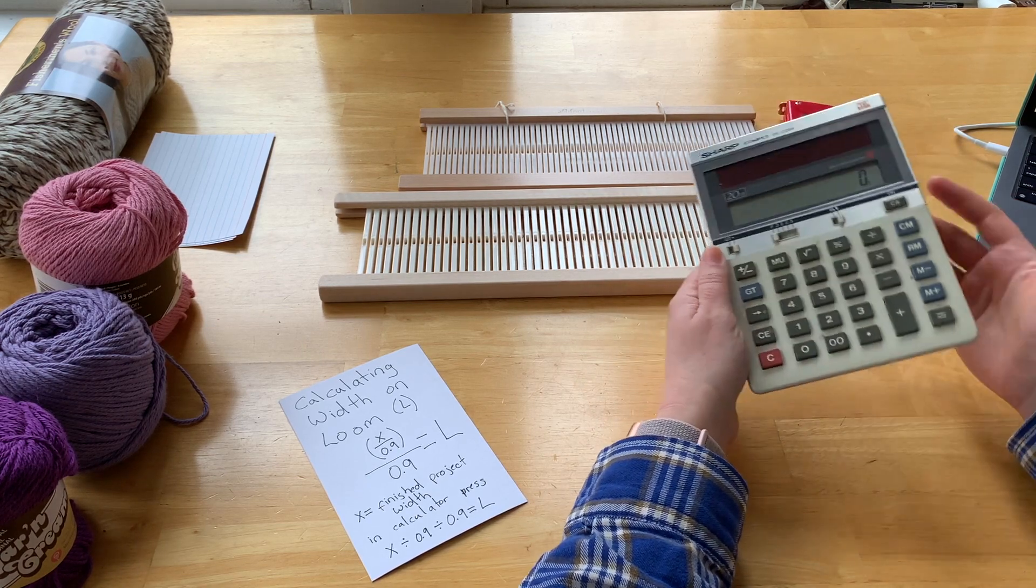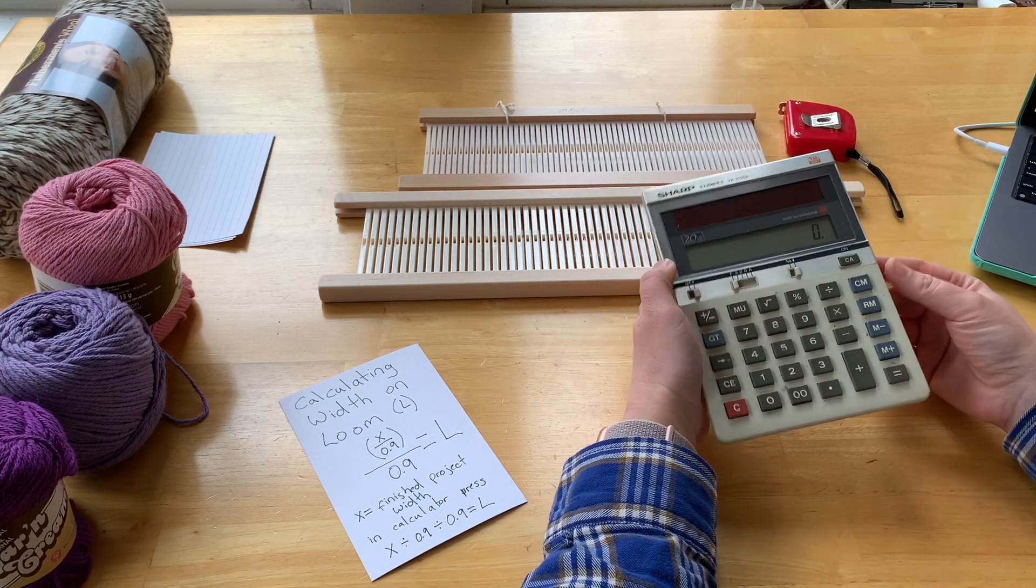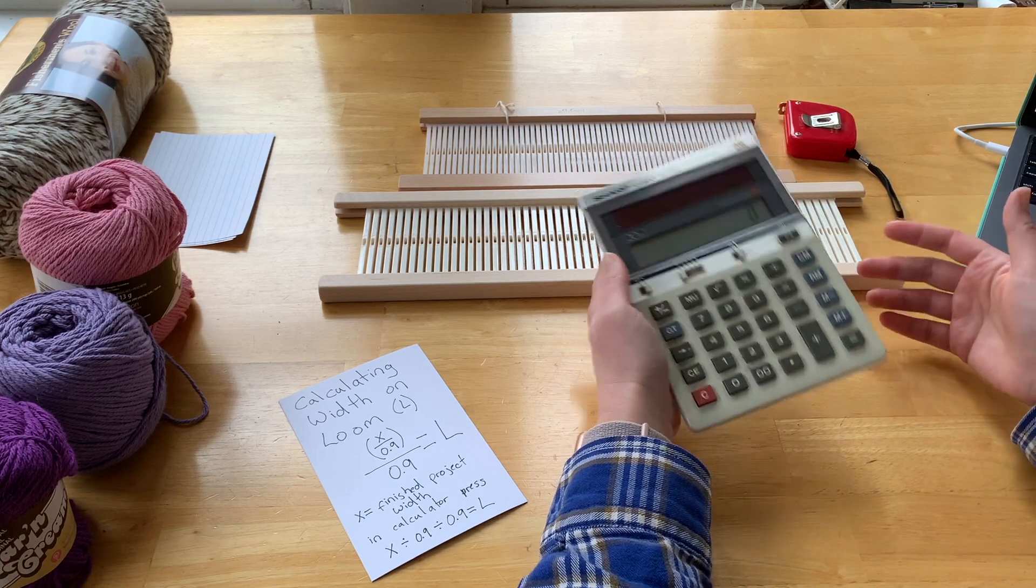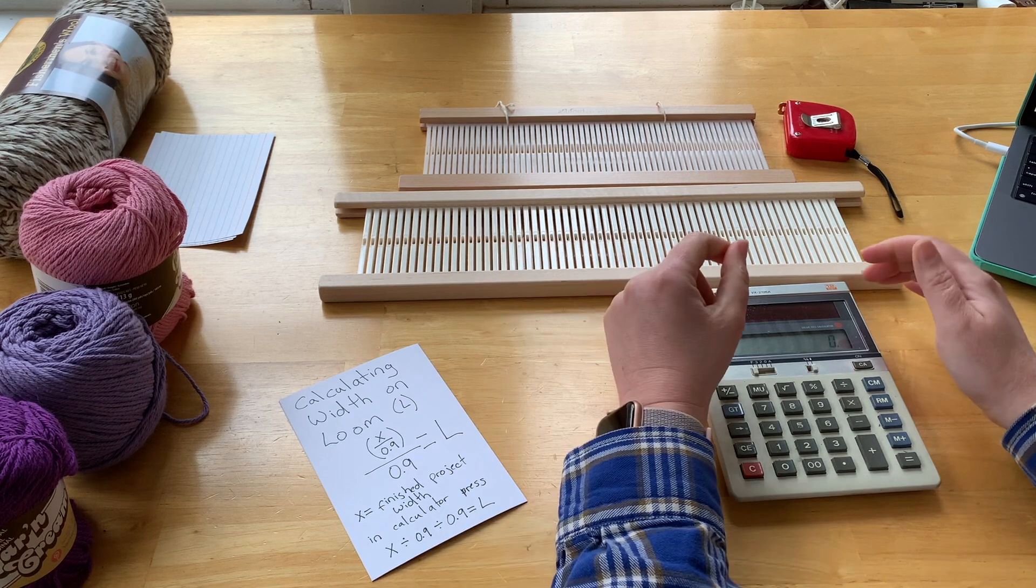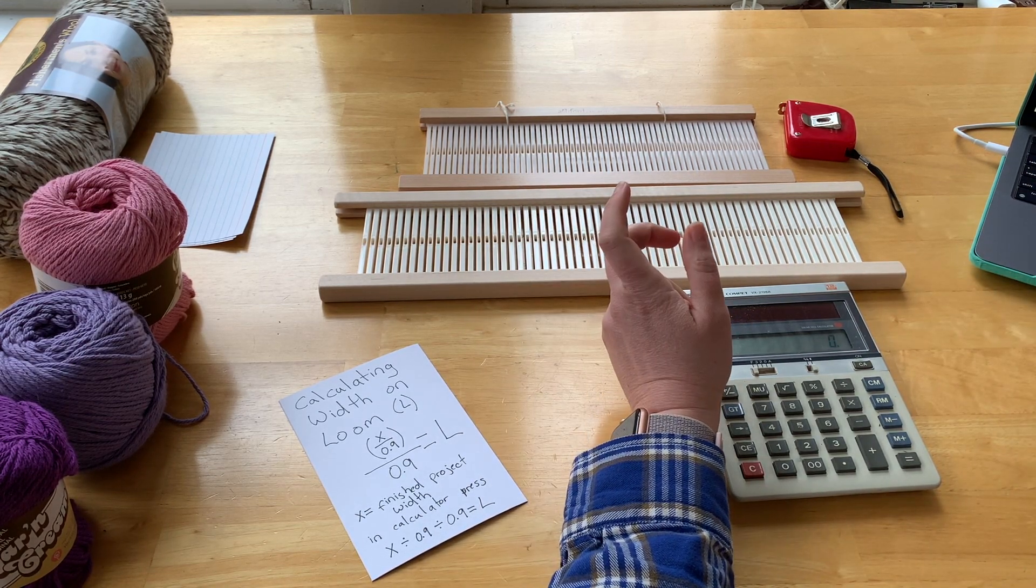The simple math would be to take 24 inches in my case and adjust for that 20% shrinkage—10% when you wet finish it and 10% draw-in on the loom. The problem is math doesn't work that way.